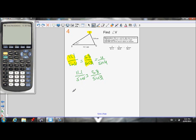So do 11.1 times sine 31. That's equal to the other cross-product of 5.8 times the sine of V.